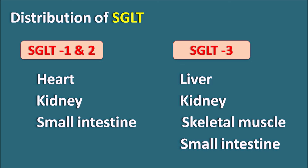In summary, for transport of glucose across different membranes, two important transporter families are needed: GLUT (glucose transporters) and SGLT (sodium-glucose transporters). The key transporters are GLUT2, present in liver, small intestine, kidney, and pancreas, and GLUT4, present in skeletal muscle, cardiac muscle, and adipose tissue. SGLT1 and SGLT2 are present on heart, kidney, and small intestine, while SGLT3 is present in liver, skeletal muscle, intestine, and kidney.